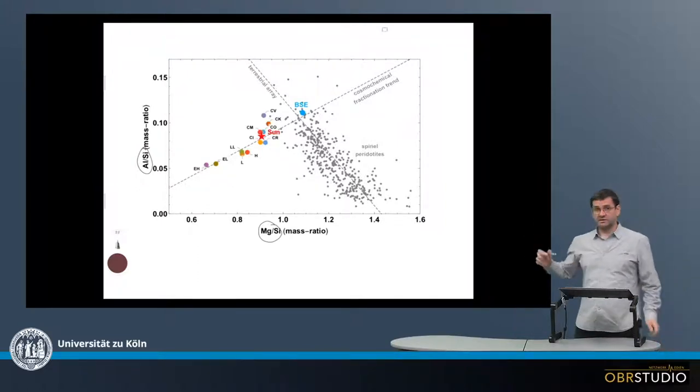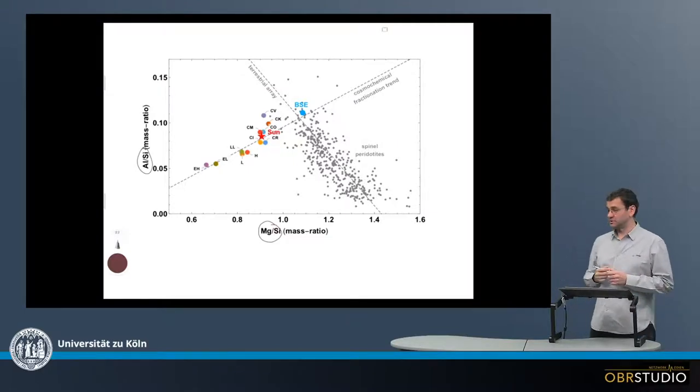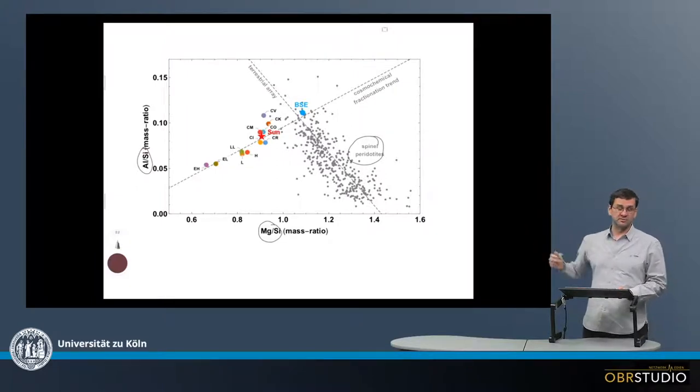And this plot contains a number of various planetary materials. So down here, for example, are the spinelperidotites. Each of these grey dots here is one spinelperidotite.